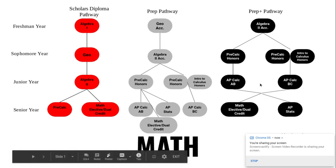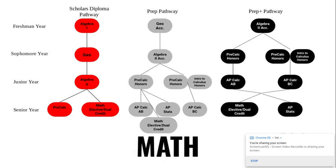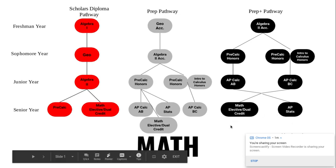If you are a super accelerated freshman and you just took AP Calculus AB or AP Calculus BC this year, next year you will have the option of taking either AP statistics or another math elective or dual credit.